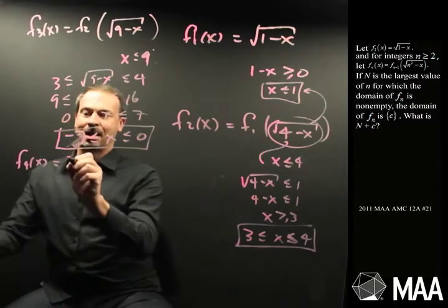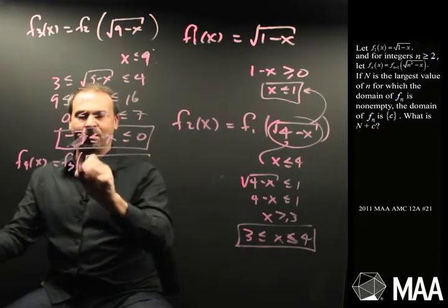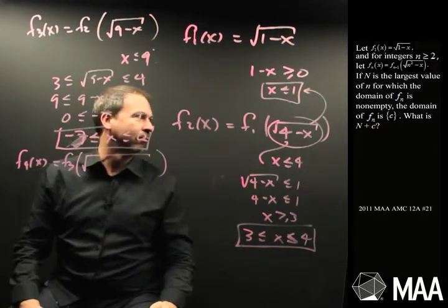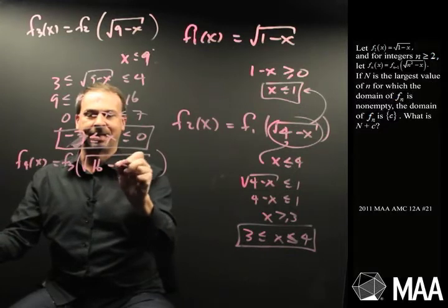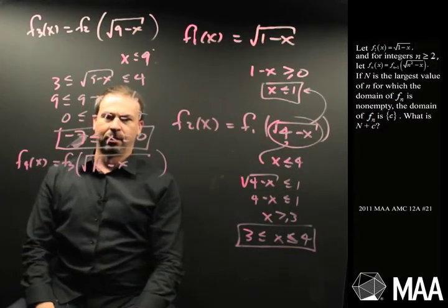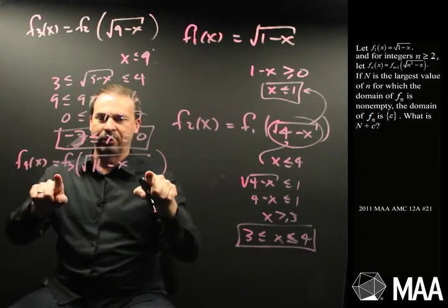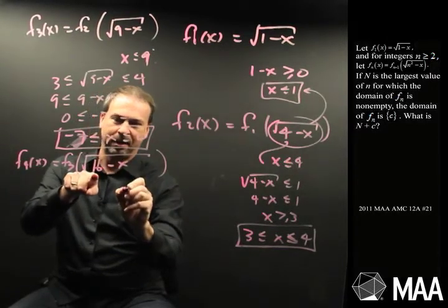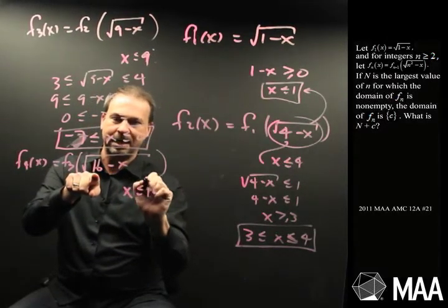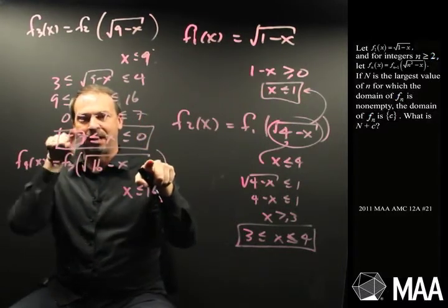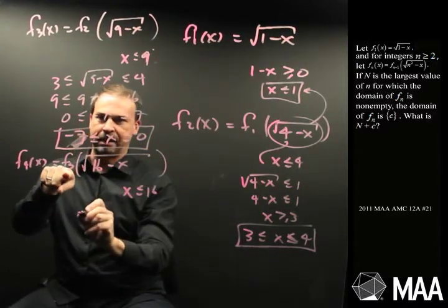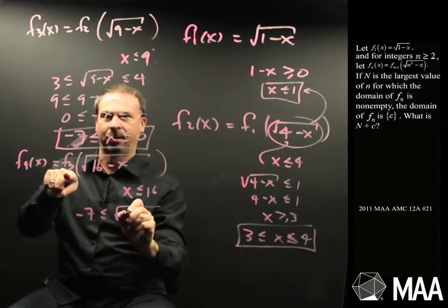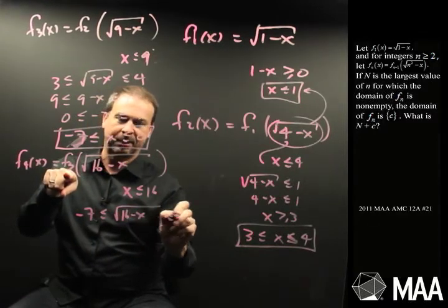F4 of x is f3 of the square root of 4 squared, 16 minus x. Alright, double barrel conditions. For this input to make sense, I need that stuff in the square root to be non-negative. I guess that means x has to be less than or equal to 16. And I need this input to be part of the domain of f3. So I need negative 7 less than or equal to the square root of 16 minus x less than or equal to 0.